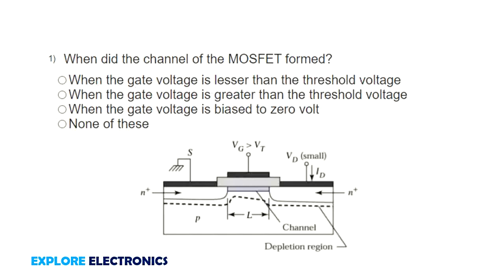When the gate voltage is less than the threshold voltage? No, that is wrong. When the gate voltage is greater than the threshold voltage? Yes, this is the correct answer. When the gate voltage is biased to 0 volts? No. So the second option is correct. When the gate voltage is greater than VT, you can observe here the channel will be created in between the source and drain under the gate region. This will be called the channel.